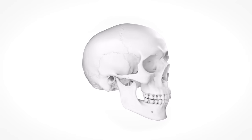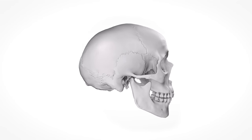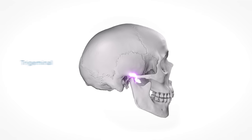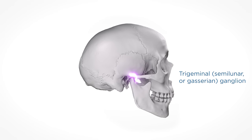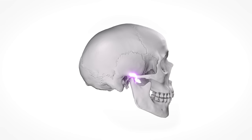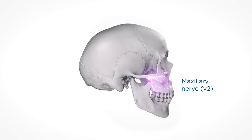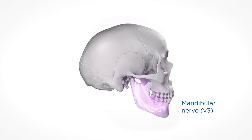The oral cavity receives innervation from the trigeminal, or fifth cranial, nerve. The sensory cell bodies of the nerve form a large half-moon shaped ganglion called the trigeminal, semilunar, or Gasserian ganglion, which is situated in the trigeminal depression of the middle cranial fossa. Originating from the trigeminal ganglion are three large nerve trunks: the ophthalmic V1, the maxillary V2, and the mandibular V3.